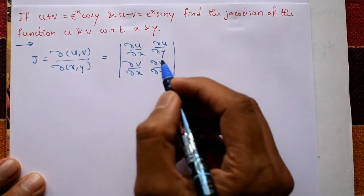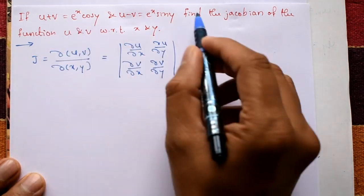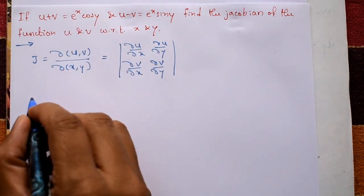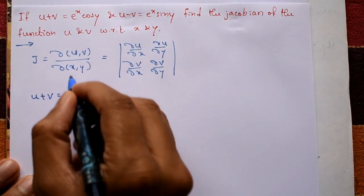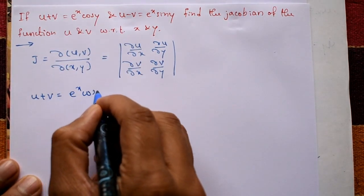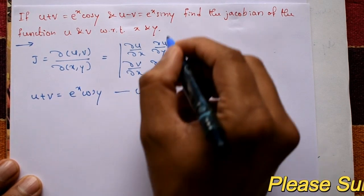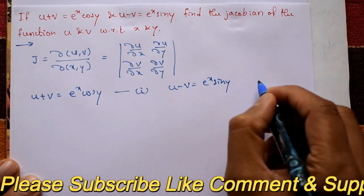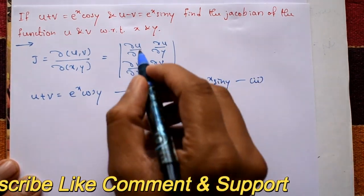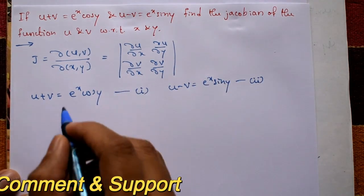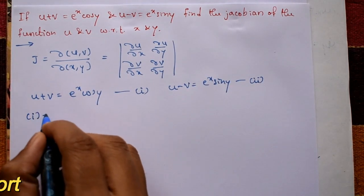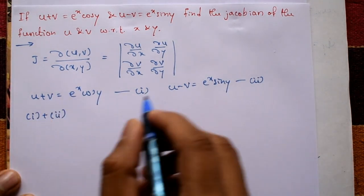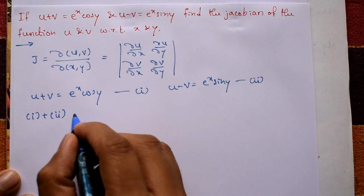We need u and v separately, but we are given u plus v and u minus v. Take the first equation: u plus v equals e raised to x into cos y — equation one. The second equation: u minus v equals e raised to x sine y — equation two. Adding these two equations, v cancels and we get 2u.